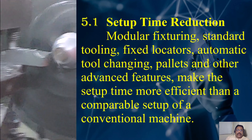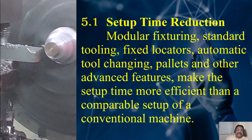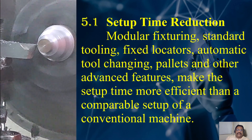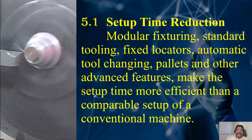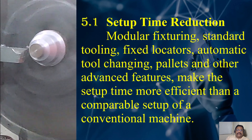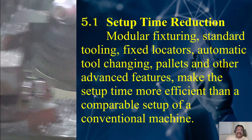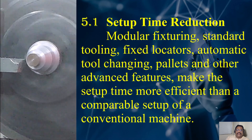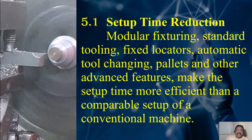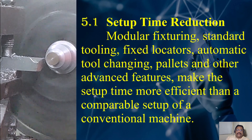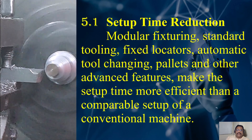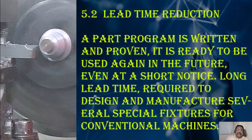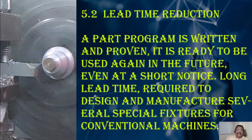Setup time reduction is achieved through modular fixturing, standard tooling, fixed locators, automatic tool changing, pallets, and other advanced features — making setup more efficient than a comparable setup on a conventional machine. With good knowledge of modern manufacturing, productivity can be increased significantly. A very similar reduction can be achieved by grouping several different operations into a single setup, even if the setup time is longer, when compared to the time required to set up several conventional machines.